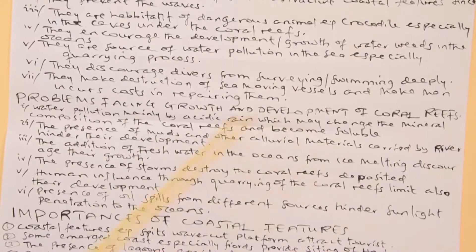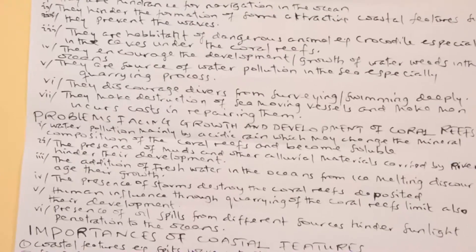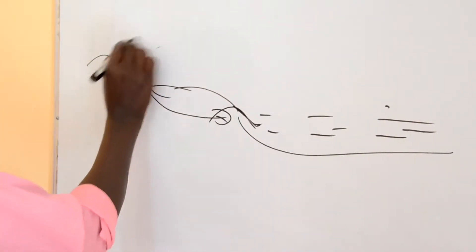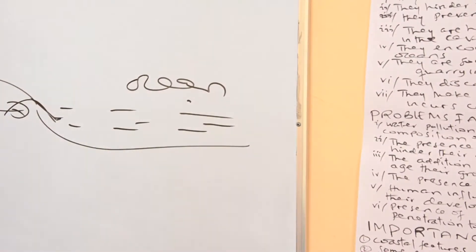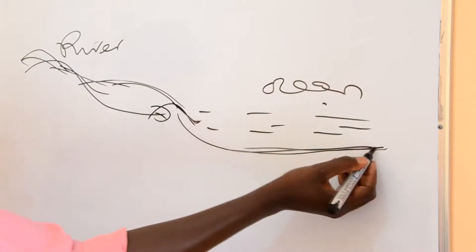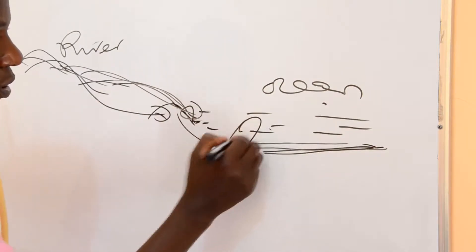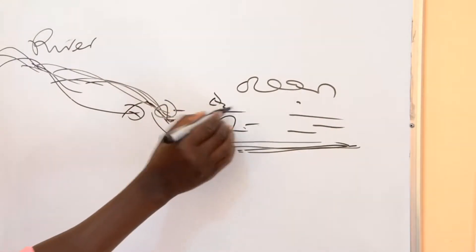Another problem is alluvial materials created by river deposition, which hinder coral reef development. This organism takes place in the ocean, but the ocean receives water from different rivers. Rivers erode materials and deposit them within water bodies and pour into the ocean, which can cause the ocean to reduce its depth or cause this alluvial material to deposit on this organism. This organism will then no longer obtain conditions like sunlight, oxygen, and others.